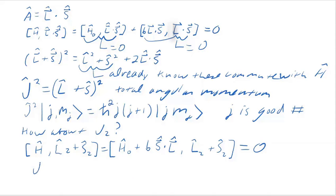Consequently, then the J Z operator on that eigenket is H bar M sub J on the same eigenket. And M sub J is a good quantum number of that perturbation Hamiltonian.